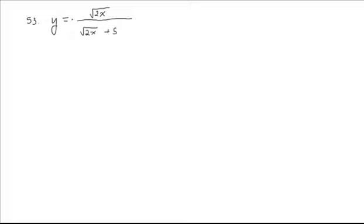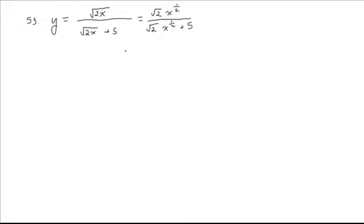We're going to take the derivative of y equals square root of 2x all over square root of 2x plus 5, and notice the x is under the radicals — we do need to take that into account. There are a couple different ways we can look at this. One is I can do square root of 2 times square root of x, or times x to the 1 half. So we rewrite it as square root of 2 times x to the 1 half plus 5.